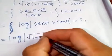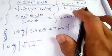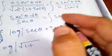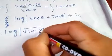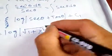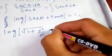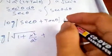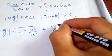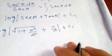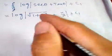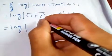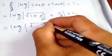So sec θ equals square root of one plus tan²θ, which is square root of one plus x squared over a squared. And tan θ is x over a. Therefore, log of sec θ plus tan θ gives us log of square root of one plus x squared over a squared, plus x over a, plus C1.